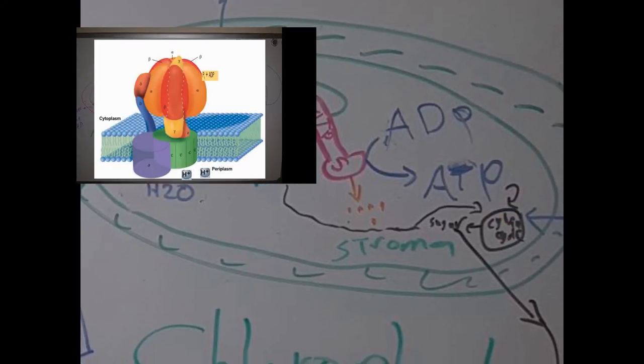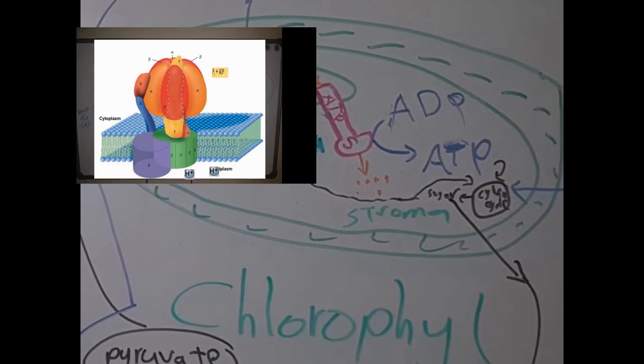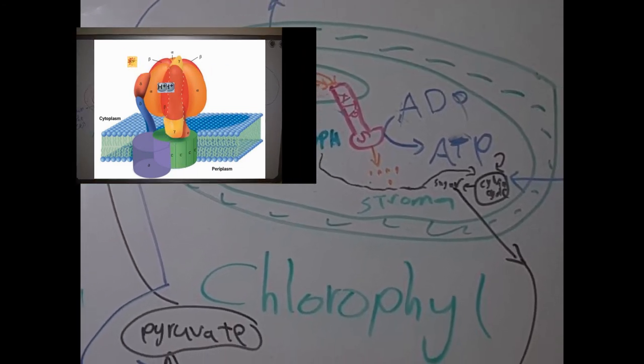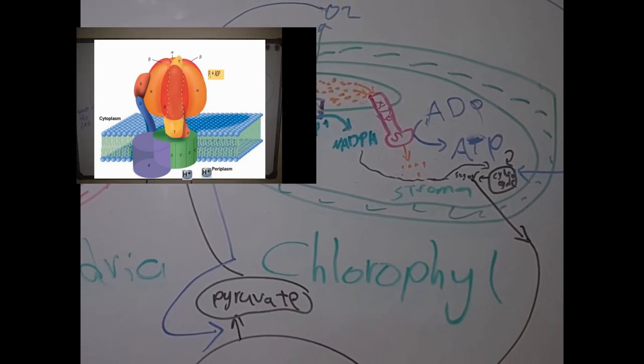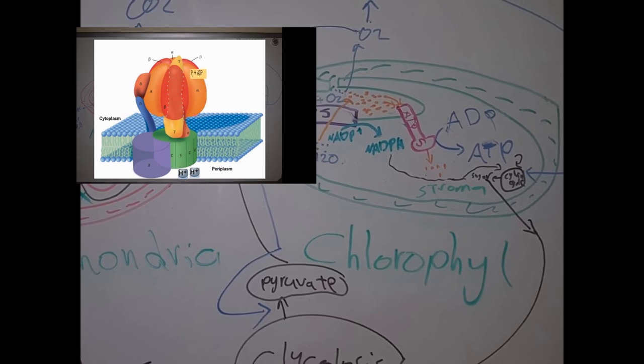So, you get the idea - ATP synthase is like a motor that rotates by the hydrogen protons that pass through it and creates ATP from ADP and phosphate.